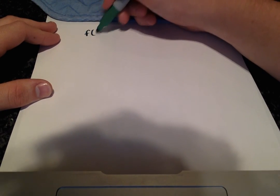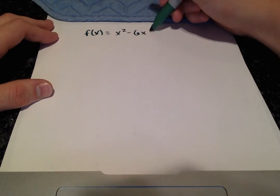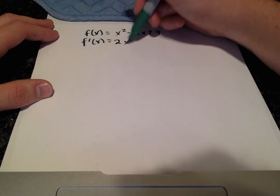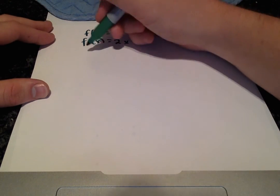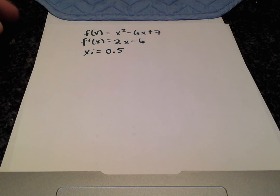So whenever they said do as many iterations as possible, you're probably hoping that this method is pretty efficient and gets there quickly. So let's hope it does. Okay, so I'll rewrite the important information that we got from the problem statement. f of x equals x squared minus 6x plus 7. And our derivative is pretty easy to calculate, just 2x minus 6. And we're starting with the initial guess, 0.5.